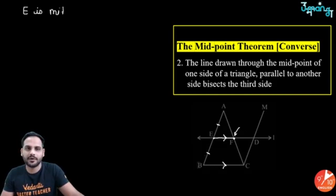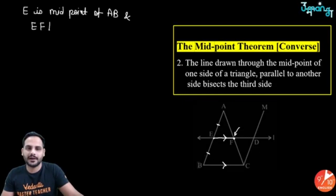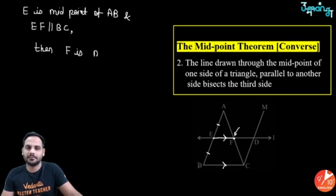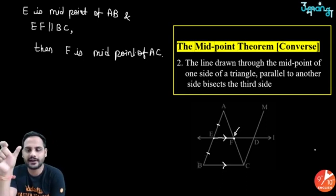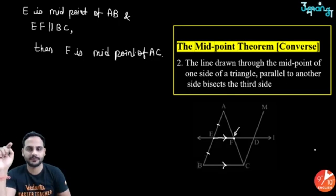So: if E is midpoint of AB and EF is parallel to BC, then F is the midpoint of AC. The midpoint theorem is used to prove lines are parallel; the converse is used to find that F is the midpoint.